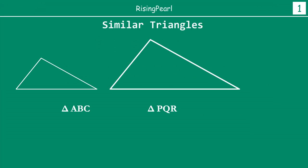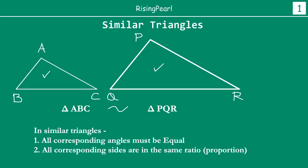Now before we take a look at the theorem itself, let's very briefly recall what we mean by similar triangles. So I have here two triangles - triangle ABC and triangle PQR. Now if it is given to me that this triangle is similar to this triangle, if somebody tells you that these two triangles are similar, what do we mean by that? Well, it means two things specifically. One, all corresponding angles must be equal.